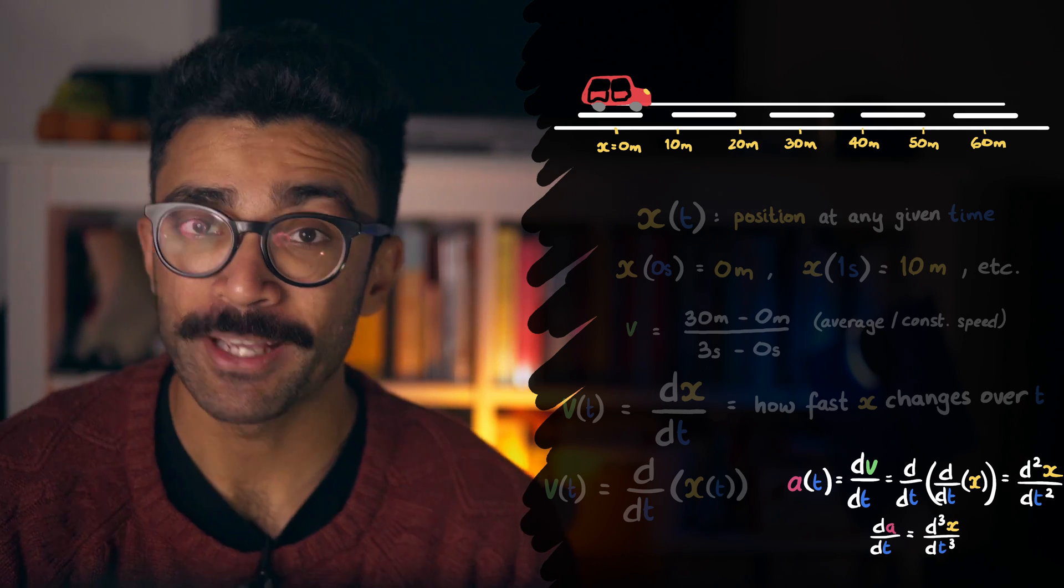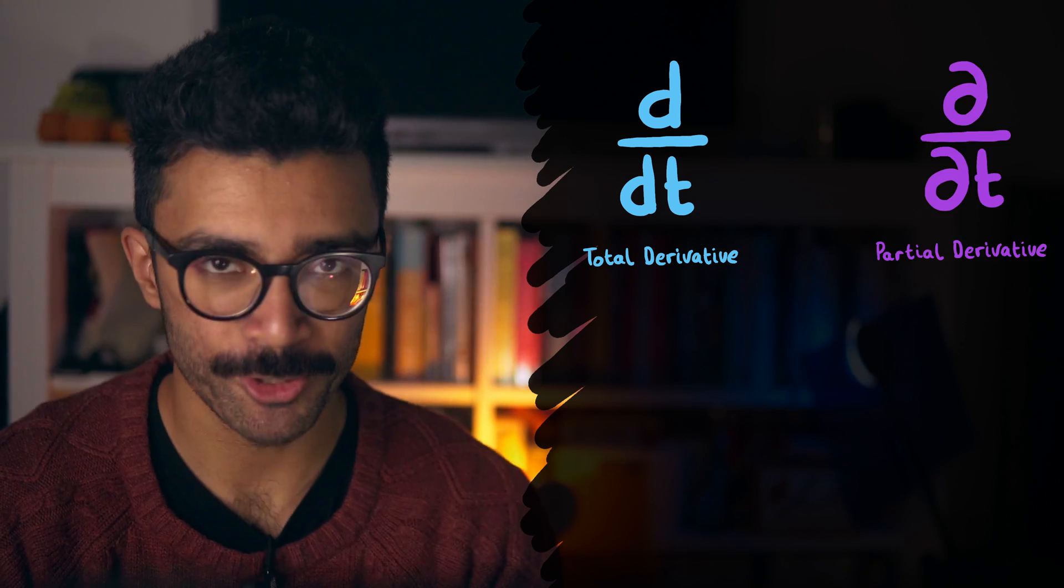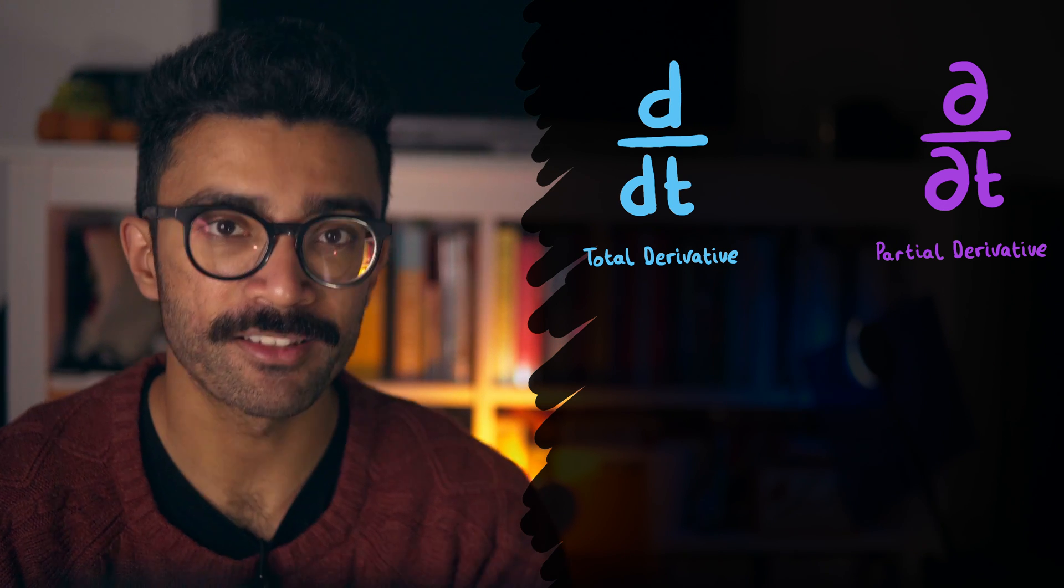So that's a very basic overview of derivatives. If you'd like to find out a bit more detail about these, then I'll leave some resources and links in the description box below. But now, let's talk about partial derivatives, where the nice, normal d's become curly d's. To understand partial derivatives, we first need to think about quantities that are dependent on two or more variables.